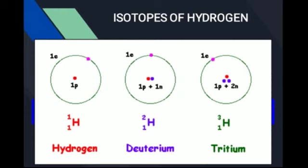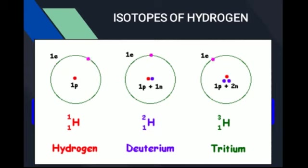Hydrogen کے تین isotopes میں پہلے isotope کو generally hydrogen بھی کہتے ہیں لیکن اسے protium کہا جاتا ہے۔ Nature میں یہ isotope 99.98% پایا جاتا ہے — یعنی ہماری nature میں جتنی بھی چیزیں ہیں ان میں اگر hydrogen ہوگا تو وہ protium ہوگا۔ جیسے پانی پیتے ہیں اس میں جو hydrogen ہے وہ protium ہے۔